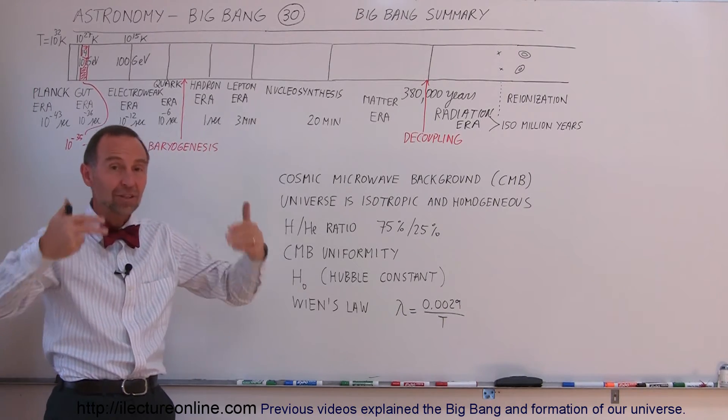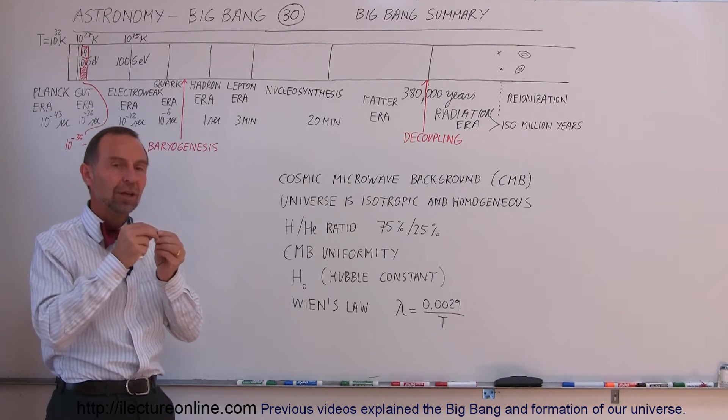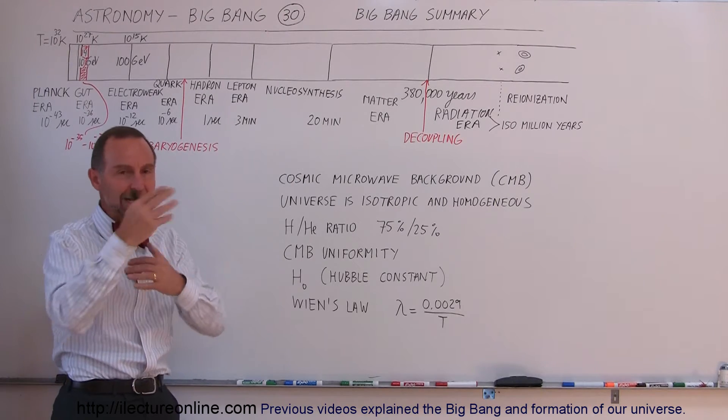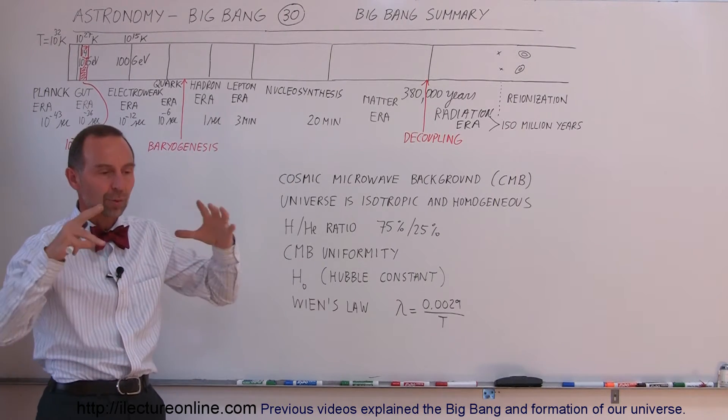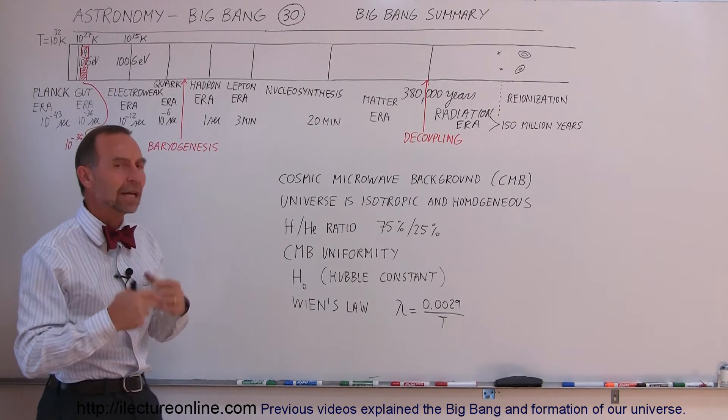The radiation that we now see as the cosmic background radiation was locked into the matter because the matter was so hot that it was ionized and the electrons were separated from the protons so that radiation could not freely move around the Universe. And it was locked in just like the radiation is locked inside a star in the radiation zone of a star.